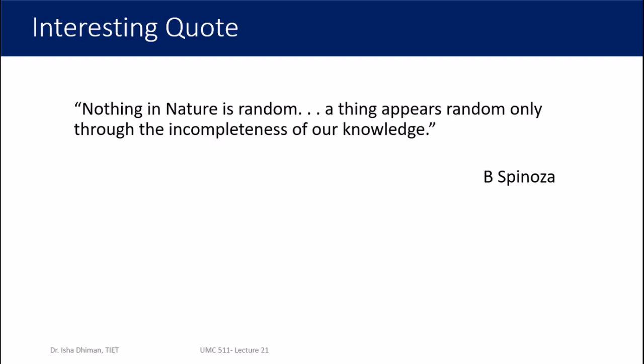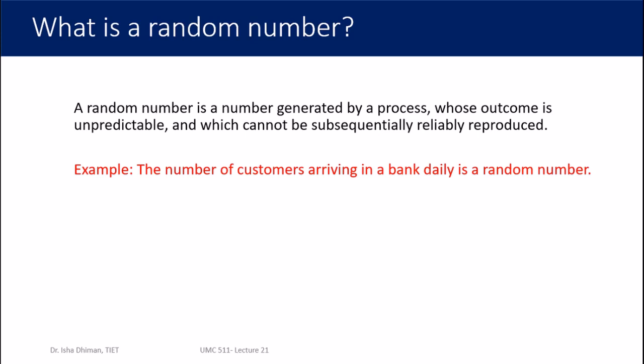So, what is a random number? Random is something which is happening by chance — we do not have any idea that it is going to happen, so we call it random: uncertain, unpredictable. The definition states: a random number is a number generated by a process whose outcome is unpredictable and which cannot be subsequently reliably reproduced. There are many words in that sentence, so let's explore them one by one.